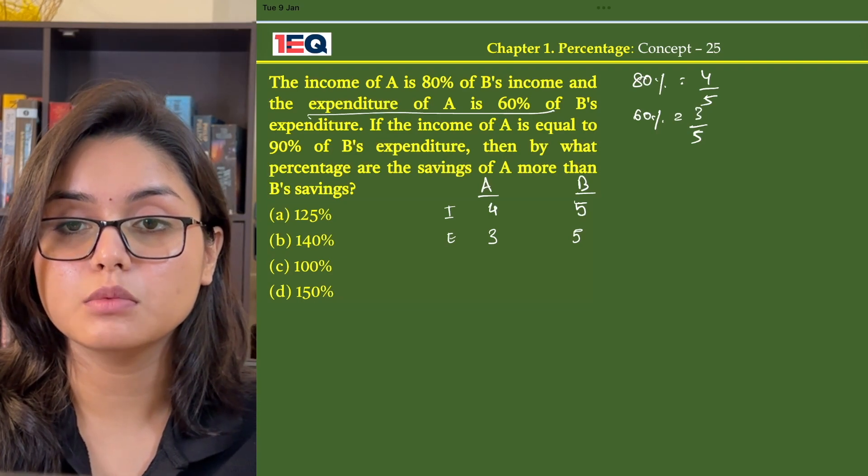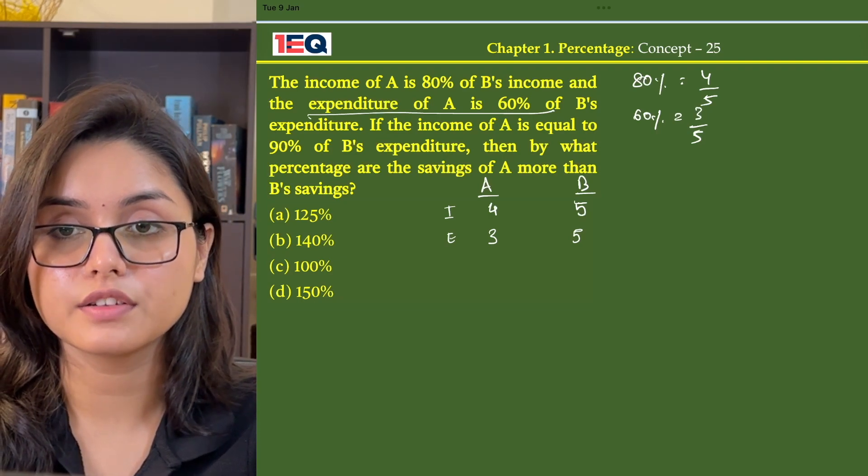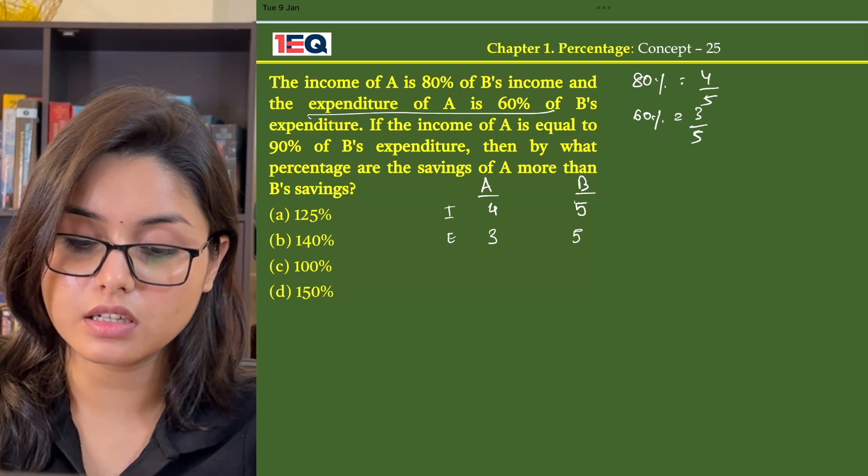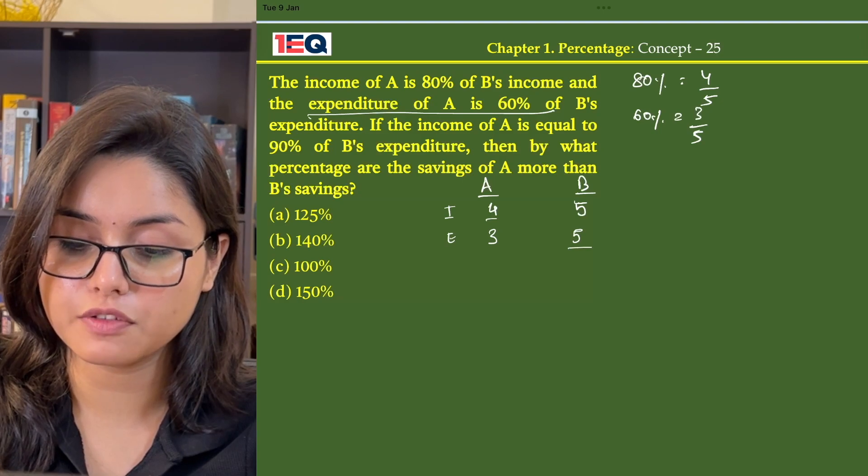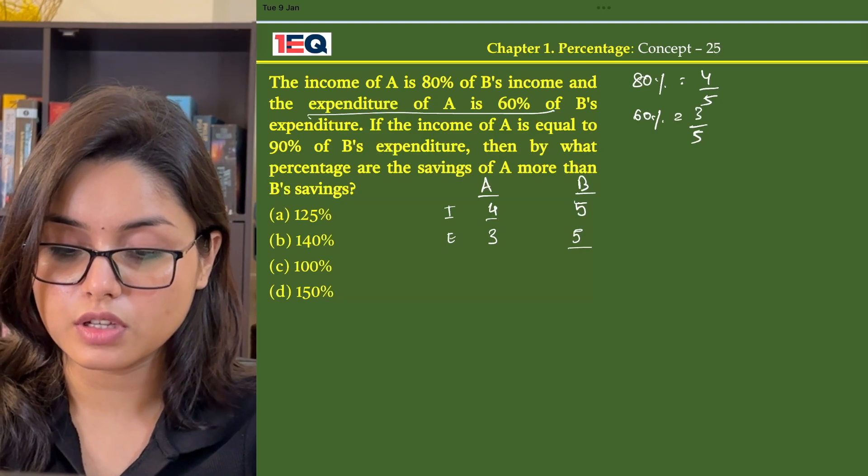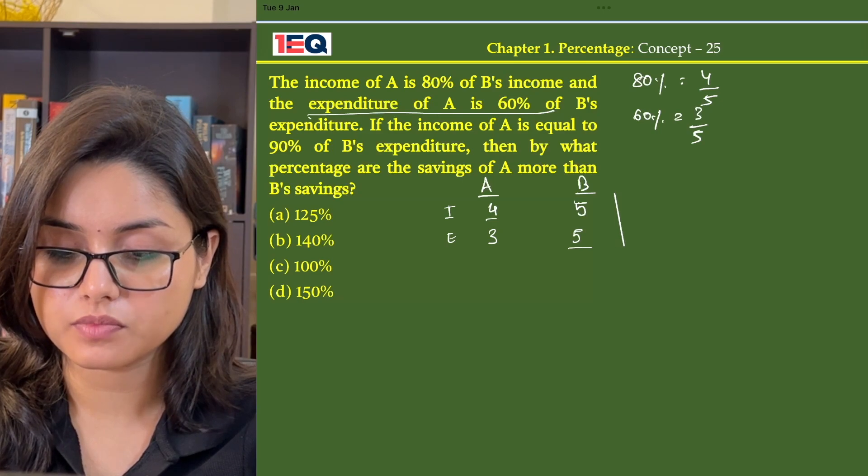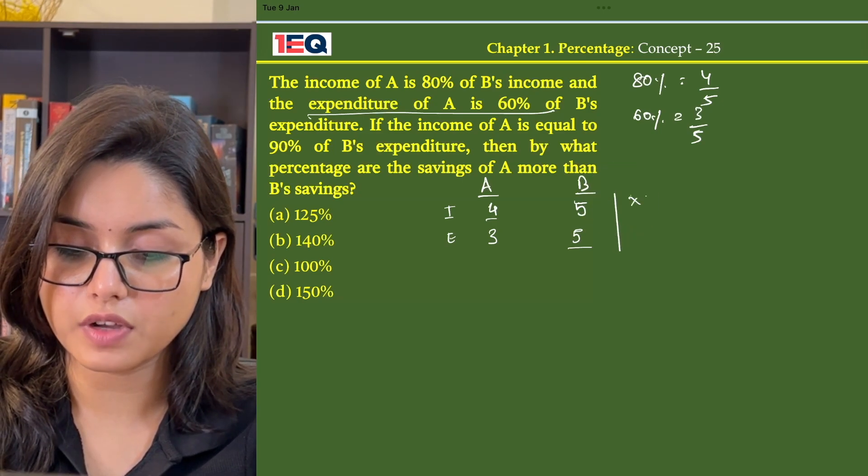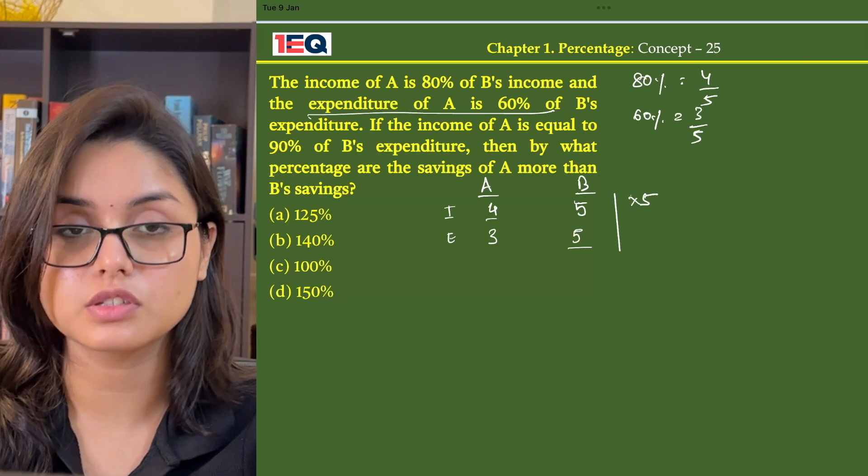If the income of A is equal to 90% of B's expenditure, that means the income of A and expenditure of B first need to be equal amounts. To make them equal, we will multiply the income with 5, so that 4 fives are 20.